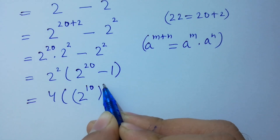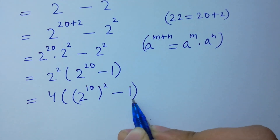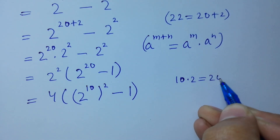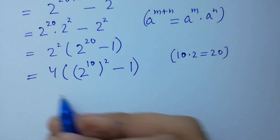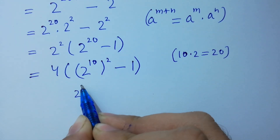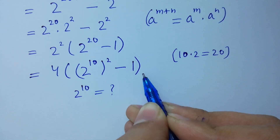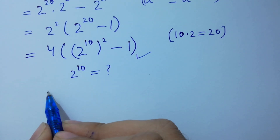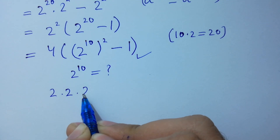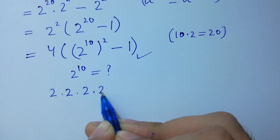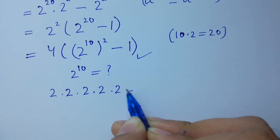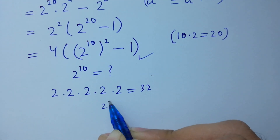Next, 2 to the power 20 minus 1 is the same as (2 to the power 10) to the whole power 2 minus 1, since 10 times 2 equals 20. Now we need to find 2 to the power 10. Since 2 times 2 is 4, 4 times 2 is 8, 8 times 2 is 16, 16 times 2 is 32, which is 2 to the power 5.